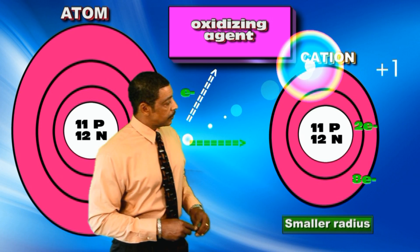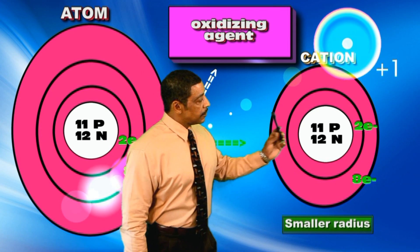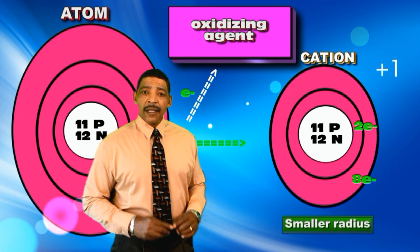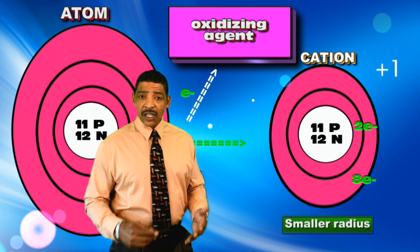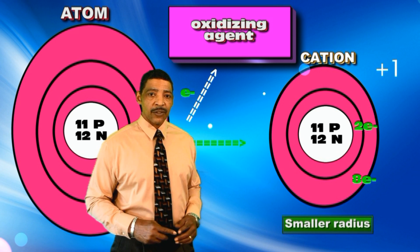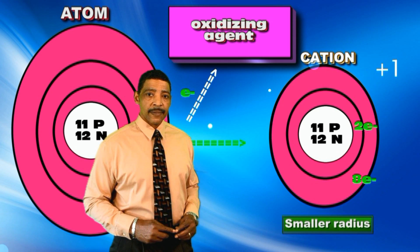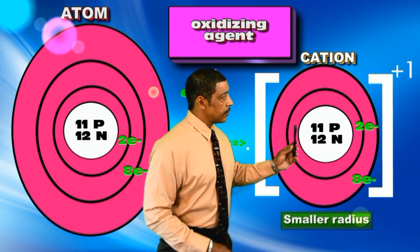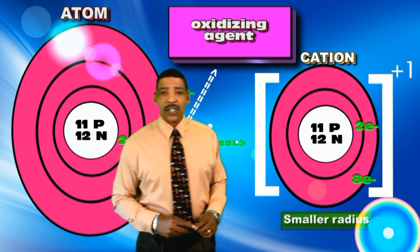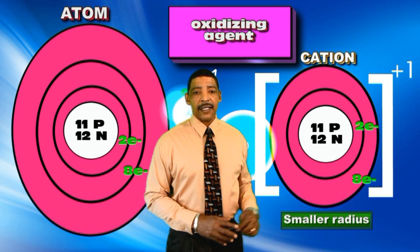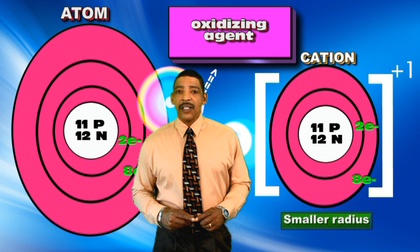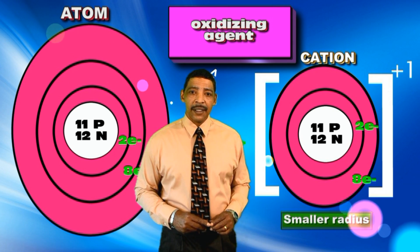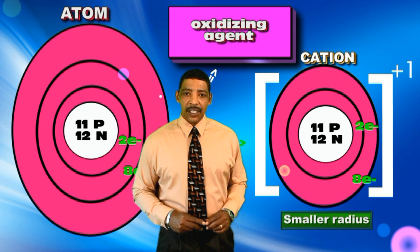The cation possesses 10 electrons and 11 protons; therefore, the charge of the cation will be plus 1. The cation is placed within brackets and the charge is written outside of the brackets, where the charge of an ion is now called the oxidation number.